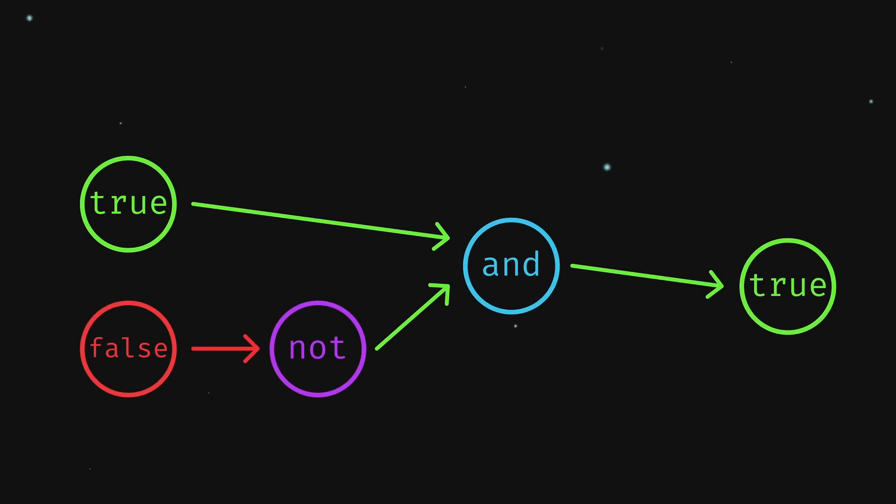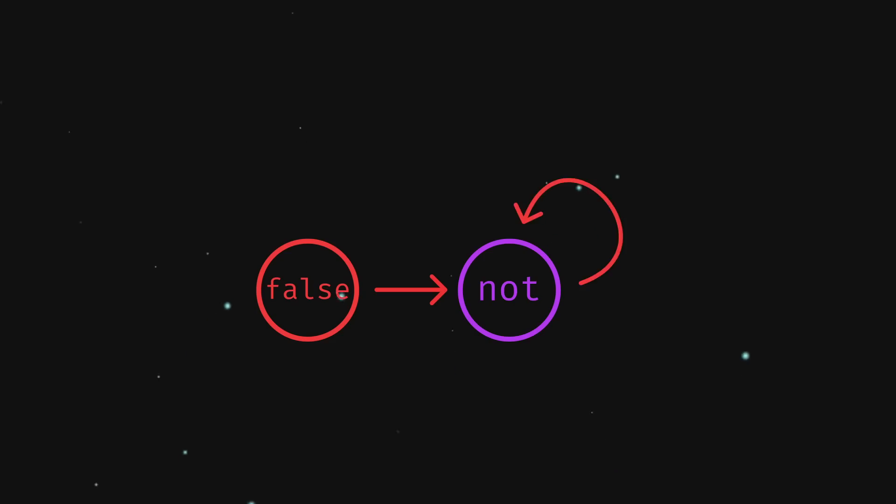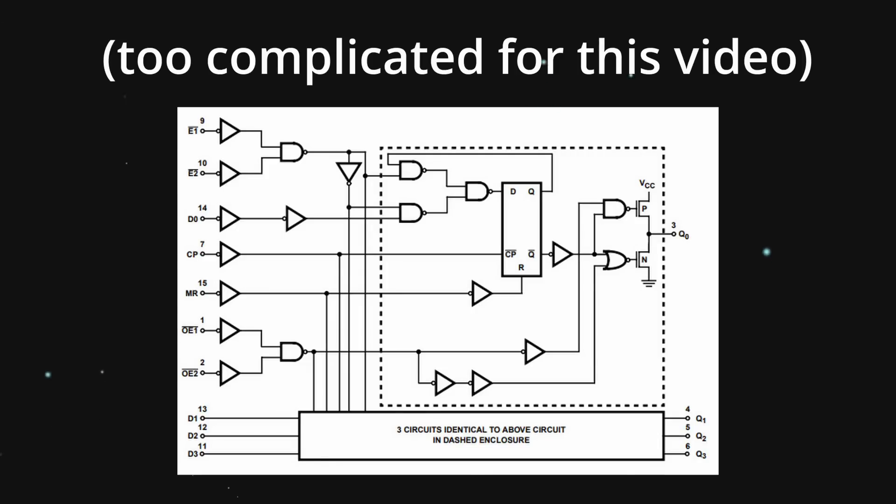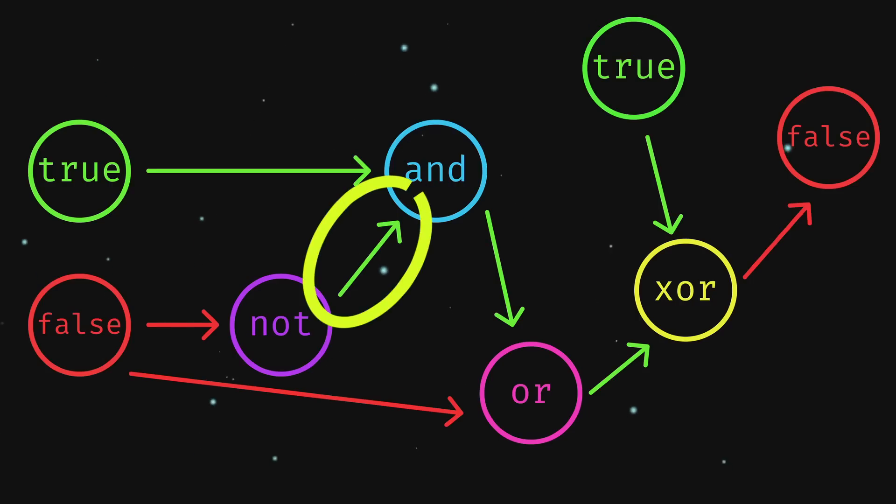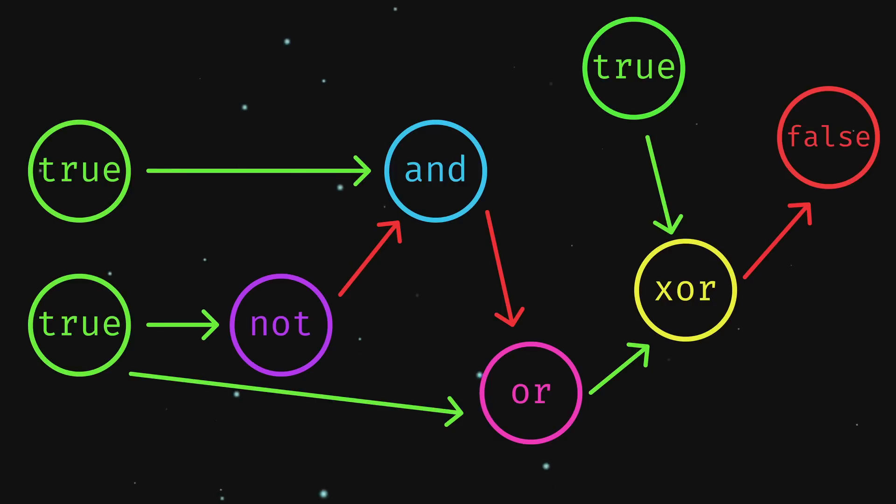Each node would represent a logic gate, would take inputs from some nodes, and pass their outputs to other nodes. The advantage of this is that you can make circles, and thus we could create a makeshift register. In this system, a value on a line doesn't change until something around it changes, so we can keep some values as memory and modify them over time.